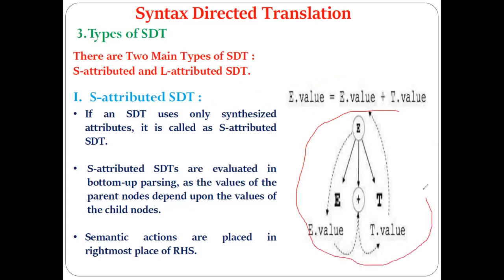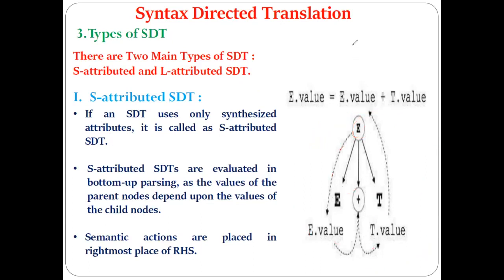This is also shown in the diagram: E's value depends on this E and this P, which is why the arrow is shown. The dotted arrow indicates the parse tree. So in the S-attributed SDT, if the SDT contains only synthesized attributes, that SDT is called S-attributed SDT.